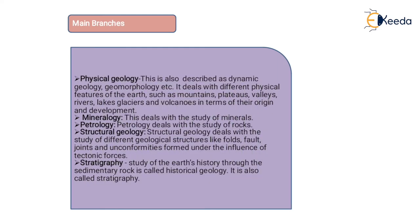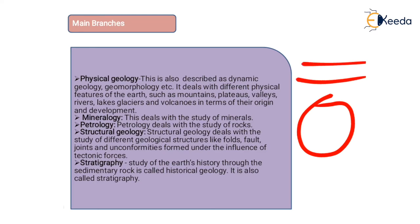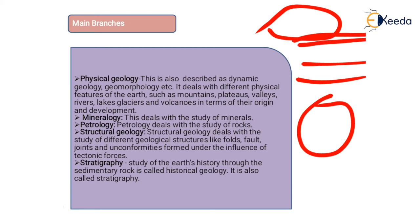Stratigraphy: we know that the Earth is a sphere made up of different zones, and the crust is made up of all three types of rocks. Rocks are arranged in layers one by one, and Stratigraphy studies which rock formed first and which formed later, their composition, age of formations, and the history of the Earth. Sedimentary rock history is also called stratigraphical geology.